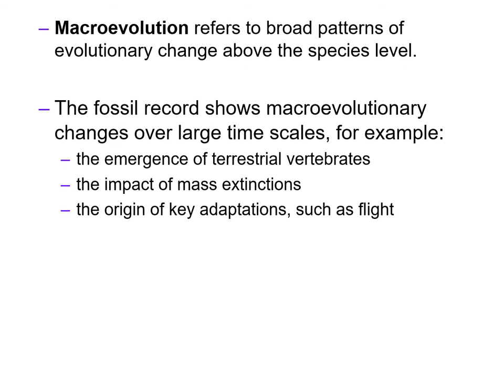Macro evolution refers to broad patterns of evolutionary change above the species level. The fossil record shows macro evolutionary changes over large time scales — for example, the emergence of terrestrial vertebrates, the impact of mass extinction, and the origin of key adaptations such as flight. Please watch the video on macro evolution; we will discuss this extensively later on.